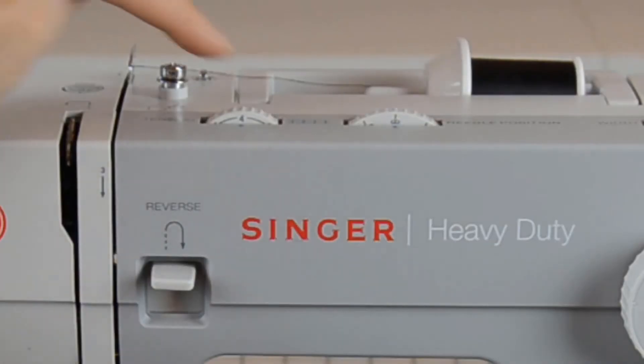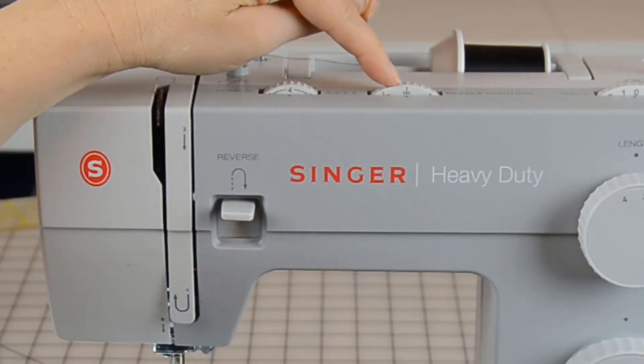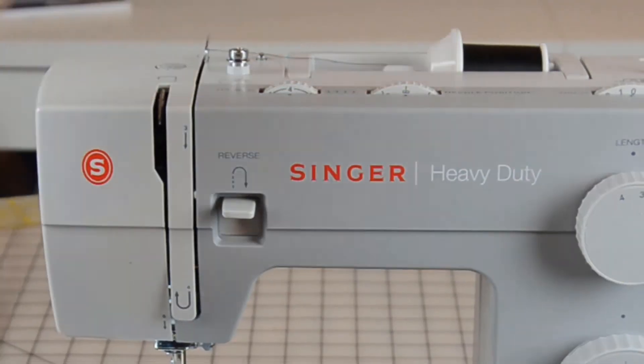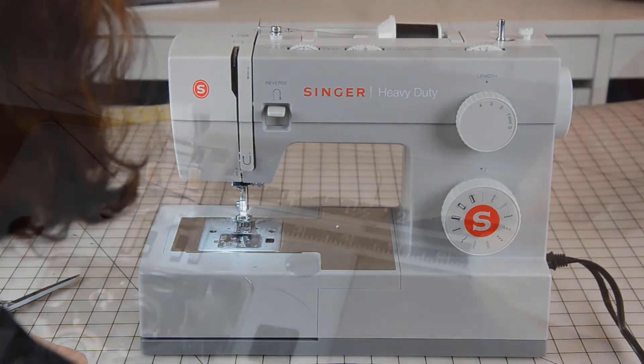The width is set at zero. The tension should be four and the needle position should be at the center. For the most part, you should not need to adjust anything on the machine, as we generally set them and keep them on these settings.